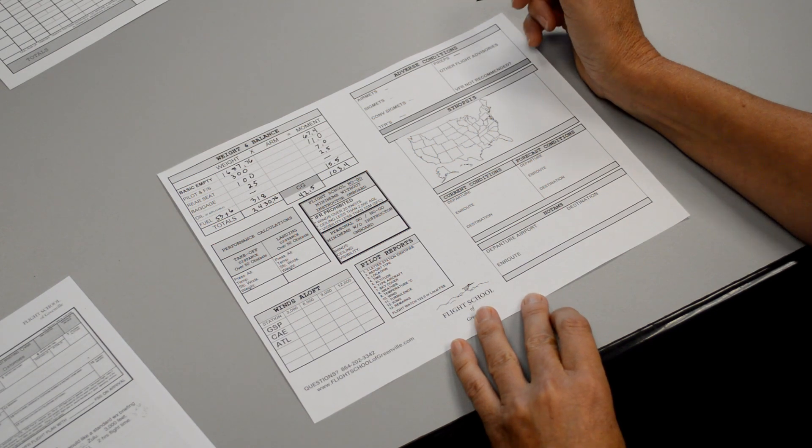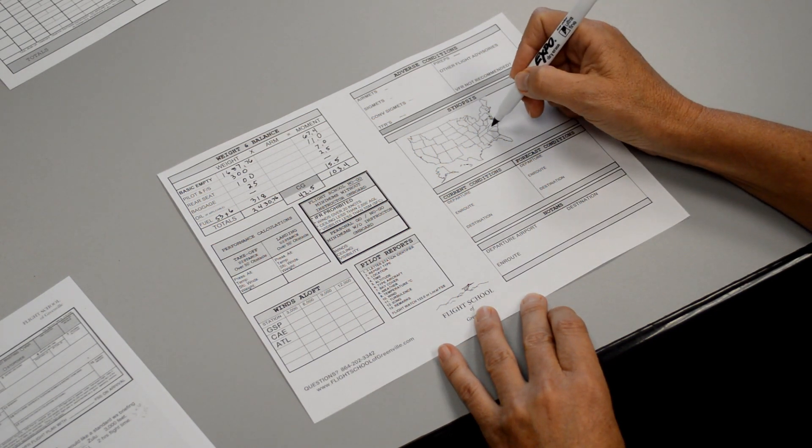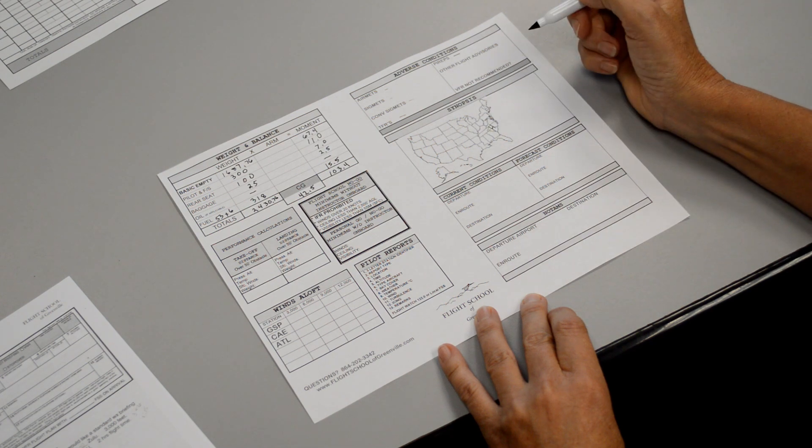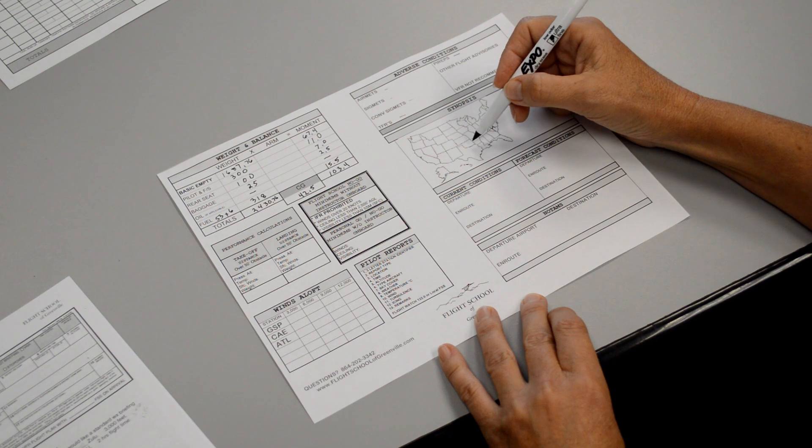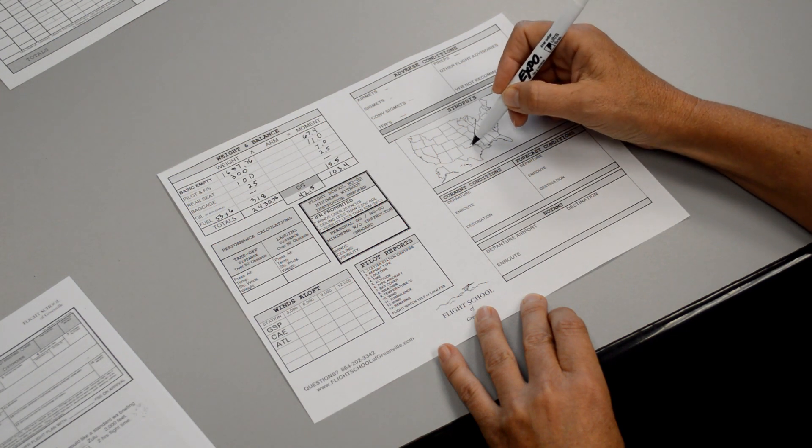For the synopsis, it looks like there's high pressure dominating the area. And there's a cold front, kind of to your northwest, extending from Oklahoma to Ohio. Current conditions.